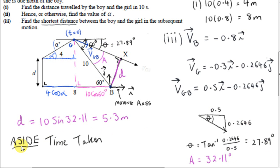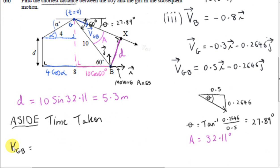That's the question done. Now, as an aside, I'm going to get the time taken for the two people to be within the shortest distance of each other. To do that, we need the speed of the girl relative to the boy. We have her velocity. So, to get the speed of the girl relative to the boy, we just use Pythagoras to get the magnitude of vector VGB. From the boy's perspective, the girl appears to be swimming with a speed of 0.566 meters per second in this direction.